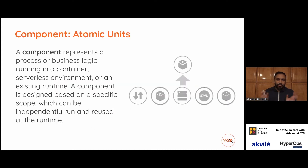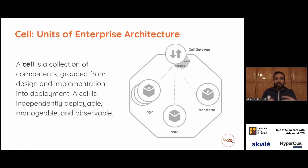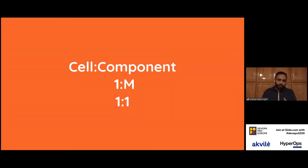We started working on this and named it cell-based architecture. In this architecture, the component is the atomic unit. The easiest way to understand a component: anything that you run in your data center or cloud infrastructure — a database, a gateway, a service, a microservice, a function — anything that you run and treat as a runtime, I call a component. The combination of components is a cell — it's the architecture construct or grouping. If you notice in the diagram, there's a gateway and a number of components inside this cell. The relationship of cell to components is mostly one to many, though in some cases it will be one to one.